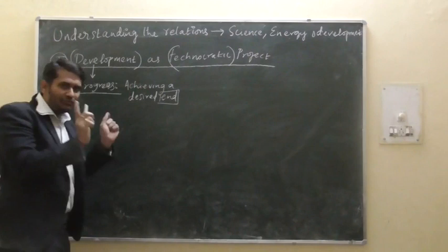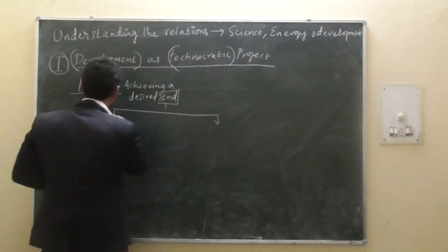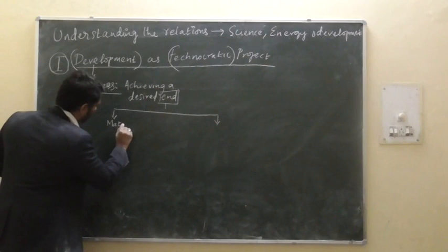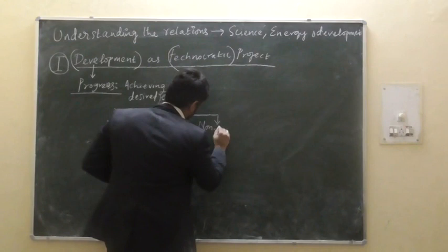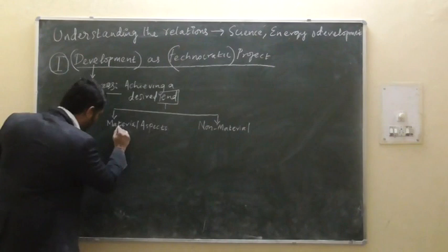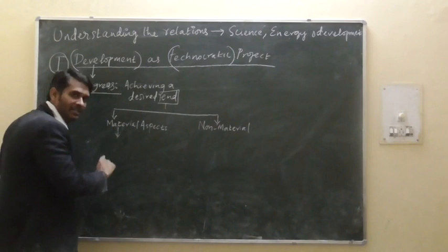This desired end normally refers to two different aspects. Number one is the material aspects of development. The second is the non-material aspects. The material aspects are understood in a modern economic sense.